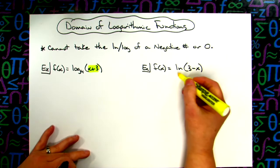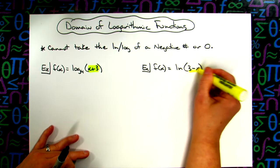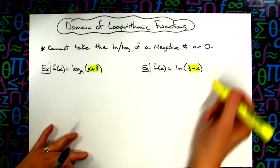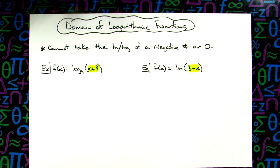Same thing with this, the natural log of 3 minus x, this inside part here cannot be negative because I cannot take the log of a negative number. It cannot equal zero, so I have to ensure that that's going to happen.